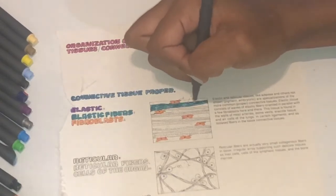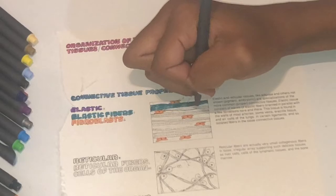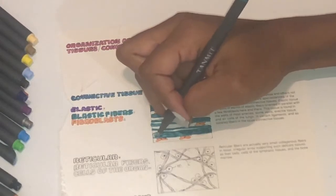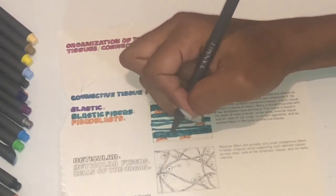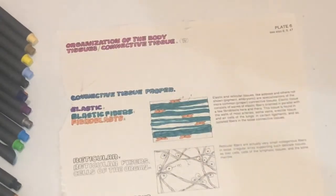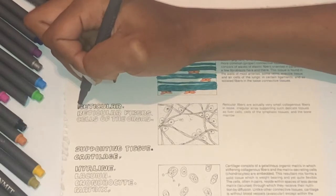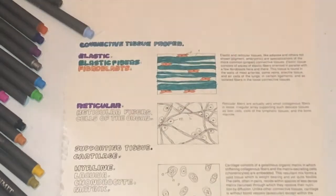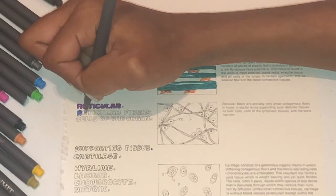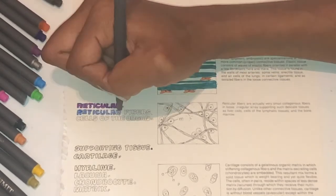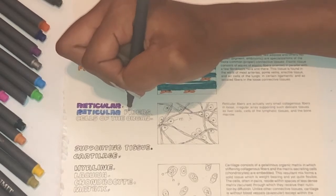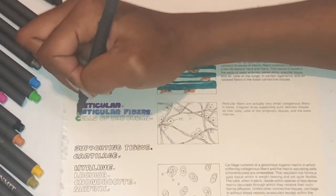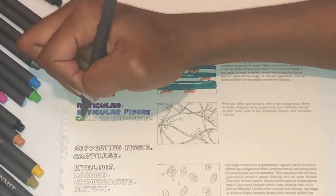So I'll go ahead and color these fibroblasts. These elastic fibers in the fibroblasts were colored in orange previously. And now we are on the reticular. And that consists of reticular fibers along with cells of the organ. Cells of the organ is M while reticular fibers are L. And the reticular fibers I'm coloring in blue. And the cells of the organ I'm coloring in green.